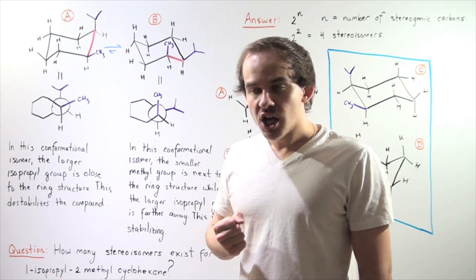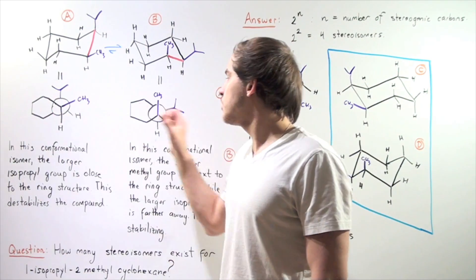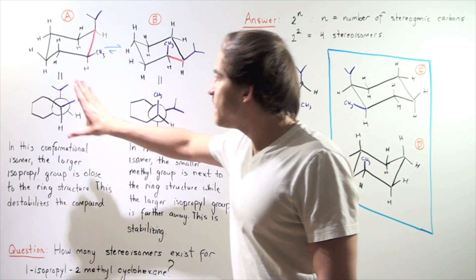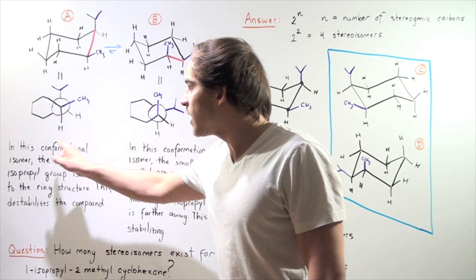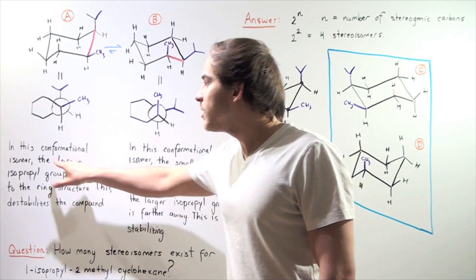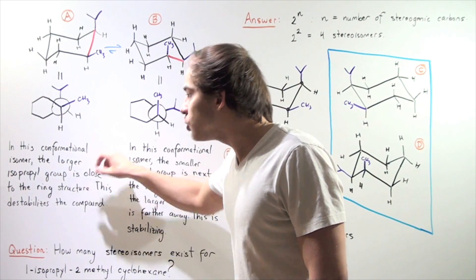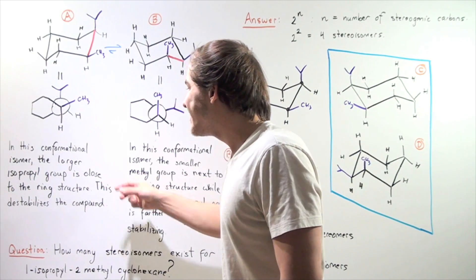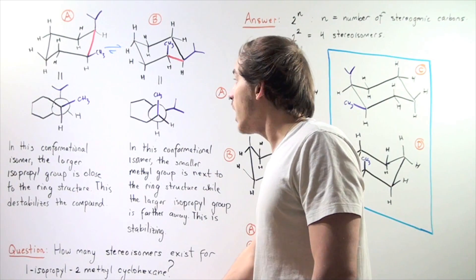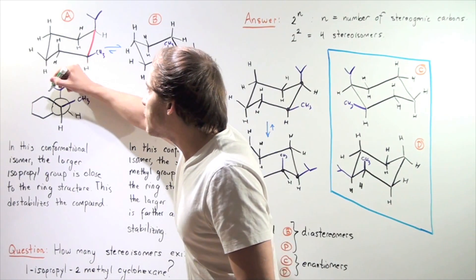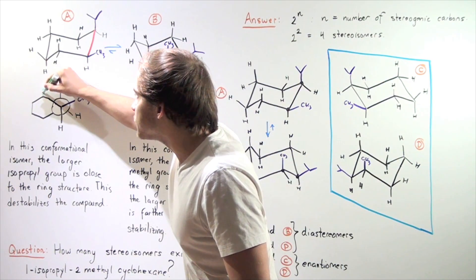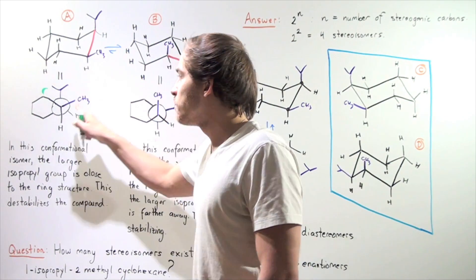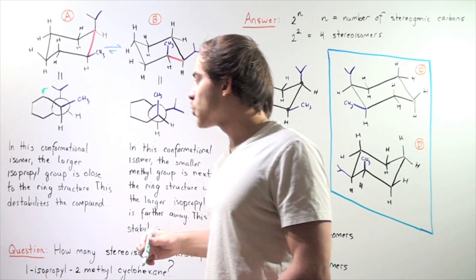To figure out which chair conformation is more stable, we have to look at the Newman projection. In the Newman projection for conformation A, the larger isopropyl group is very close to the ring structure. This destabilizes the compound because there is a bumping effect — steric hindrance — between this large isopropyl group and the ring structure.